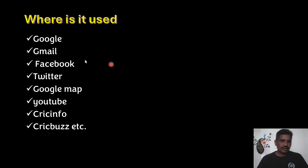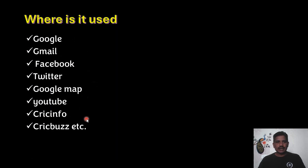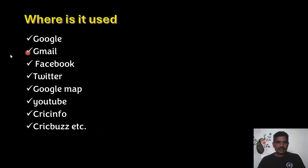Where is Ajax used? There are a few applications that use Ajax: Google, Gmail, Facebook, Twitter, Google Map, YouTube, CrickInfo, and CrickBuzz. Many applications are using Ajax, but these are just a few of them.